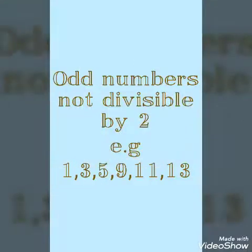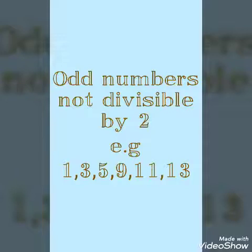Next we have odd numbers. Odd numbers are those which are not divisible by 2. Examples are 1, 3, 5, 9, 11, and 13. In counting, when we pick out all the even numbers, the remaining numbers which cannot be divisible by 2 are said to be odd numbers.